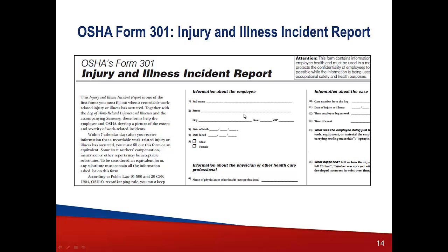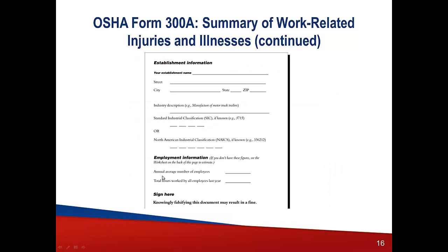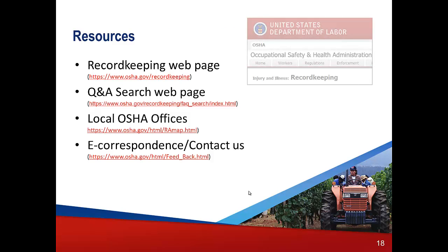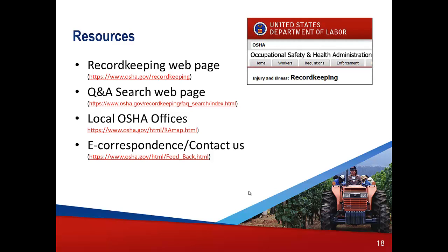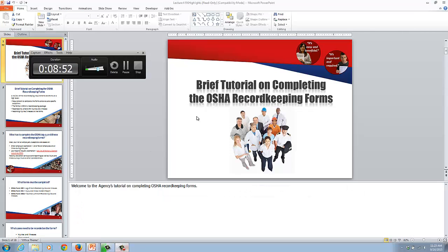Here is Form 301 — you can read through that; it does tend to blame the worker. Here's a picture of the 300A showing how you tabulate the column totals. You keep these forms for up to five years. If you make them digital, such as an Excel document, you can keep them for ten years since they don't take up physical space. There are other requirements for how long to keep the forms, but five years is the minimum. Check out the additional resources on the OSHA website and the documents posted on D2L. That's it — I'll stop this recording and do the final one.